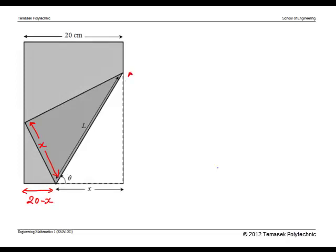This length is 20 minus x. And this length, by Pythagoras theorem, since this is a right-angled triangle, is square root of L squared minus x squared.